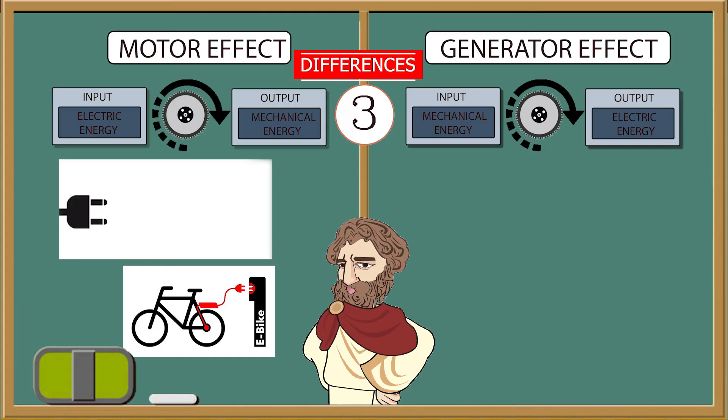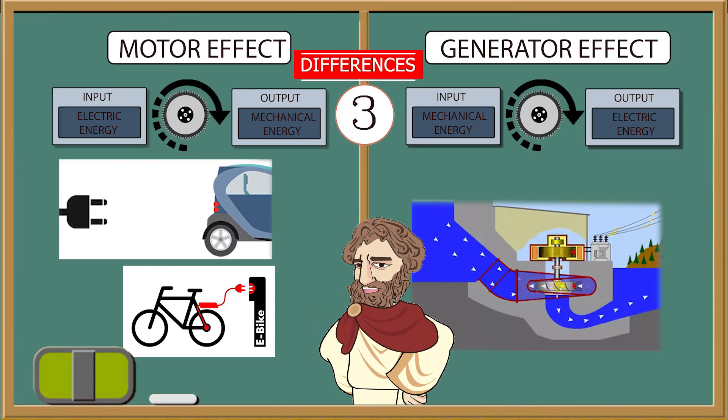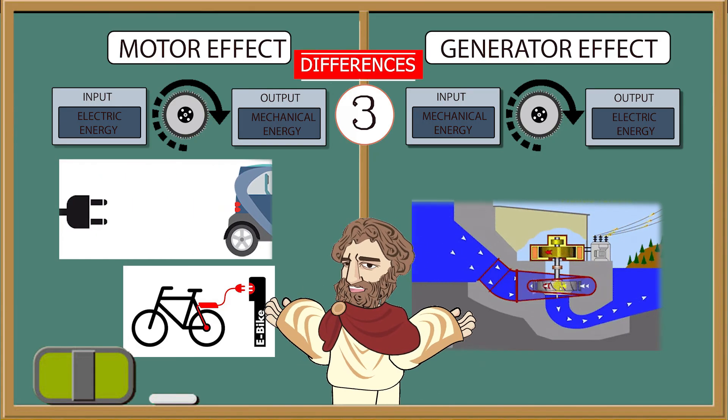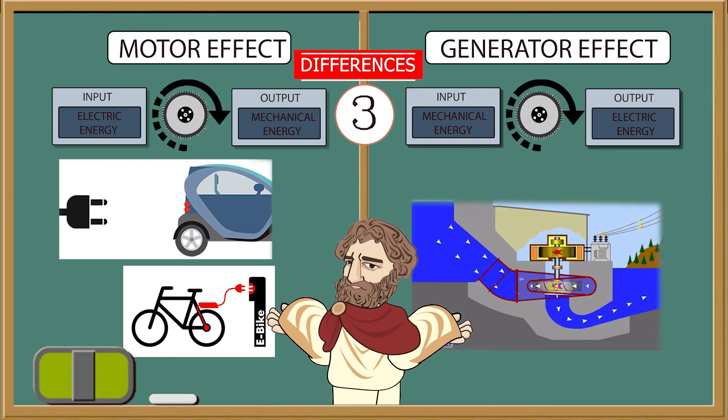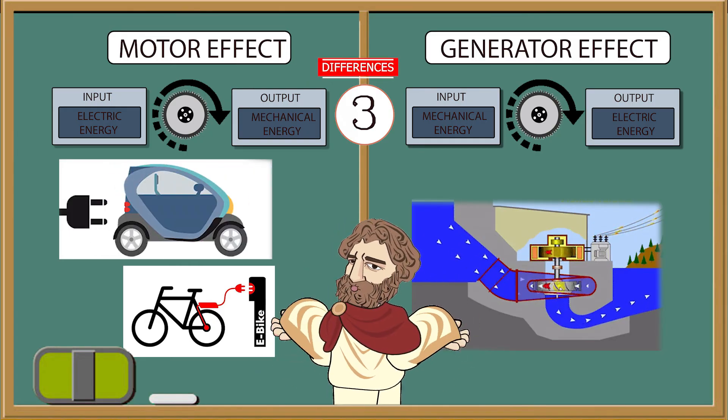The example of the generator is that in power stations, the turbine is used as a device which converts mechanical energy or force of water falling from the dam to generate electric energy.